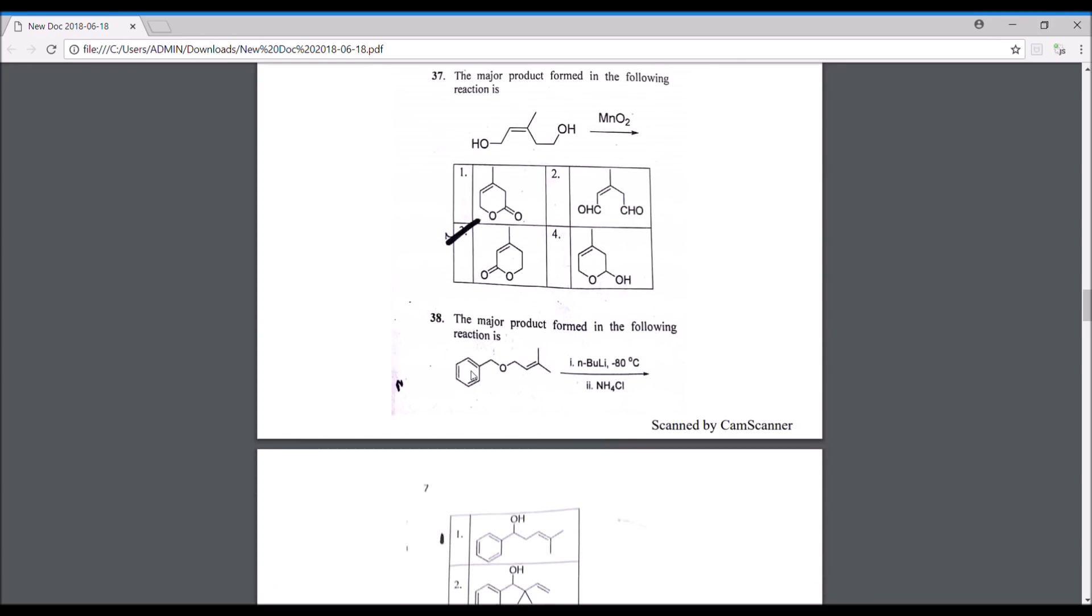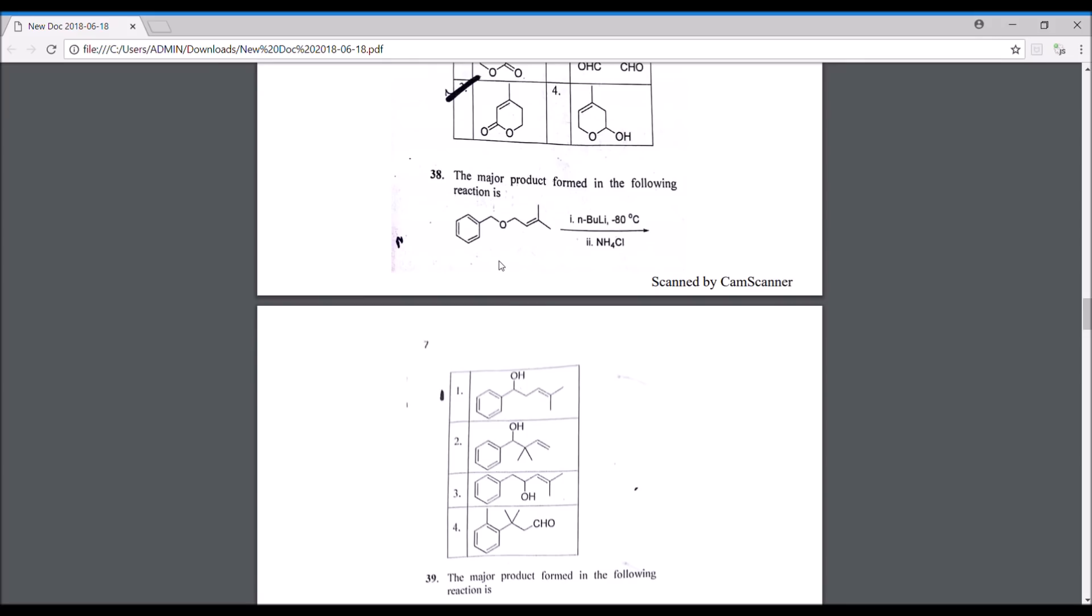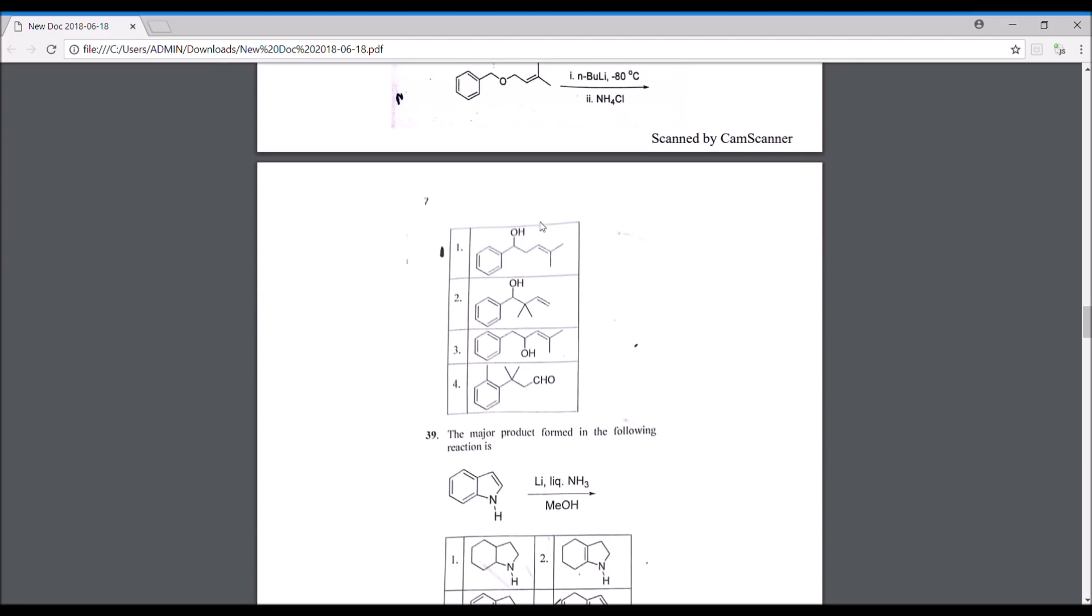This is a straightforward question from organic chemistry. It's copy-paste from textbooks. MnO2 is an oxidizing agent and it leads to the oxidation of allylic alcohols to carboxylic acids. Then this oxygen attacks this carboxylic acid to form this six-membered ring, and this is the correct answer, option number three. This one, I'm not sure about, but n-butyl lithium is there, so it will abstract the most acidic proton. Wherever the lithium gets attached, that will be the most stabilized carbon ion. If lithium gets attached at the benzylic position, it will be stabilized due to resonance. The benzylic position will be highly stabilized, so lithium will get attached there.